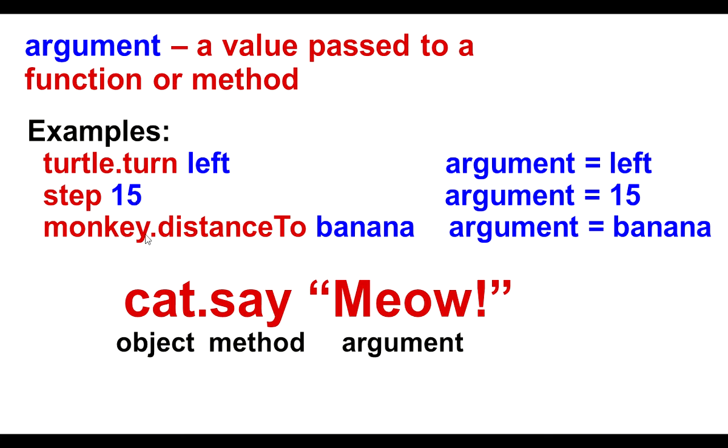Monkey distance to banana is the argument being passed to the distance to method to say we're finding the distance between the monkey and the banana. So all three of these arguments tell us exactly how what is being done with this method. How it's being done.